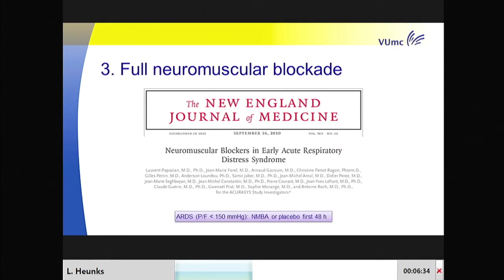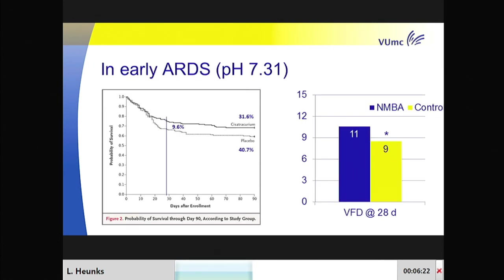Third, if the patient has a really high respiratory drive, data from Papazian support going for full neuromuscular blockade—completely taking the diaphragm out of the loop. This improves survival in patients with a PF ratio lower than 120, though we don't know the effect for patients later in their disease.